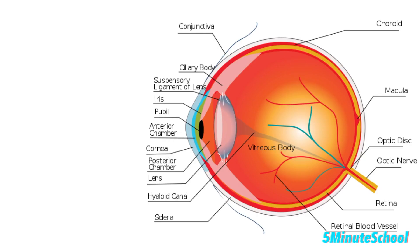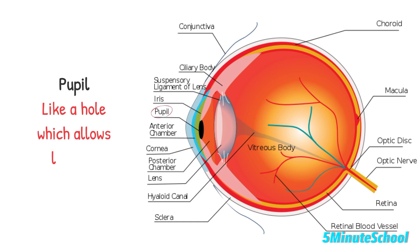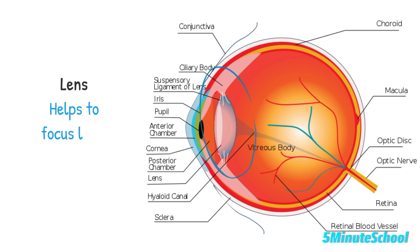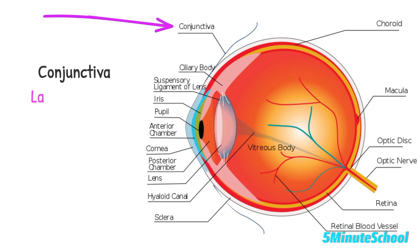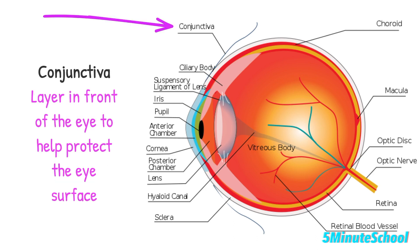So let's look at the anatomy of the eye. I have here an image of the eye with a few different components to talk about. The pupil is like a hole that allows light to enter the eye. The lens helps to focus light onto the retina. The conjunctiva is a layer on the front of the eye which helps to protect the eye surface.